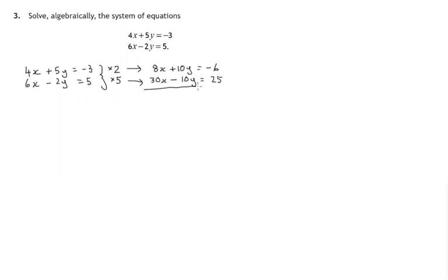Now remember the whole purpose of doing this was to try and get rid of one of the variables, in this case y. And you'll notice that by adding 10y and negative 10y together we'll get 0y. That term, the y term would disappear and one of the variables will have gone.